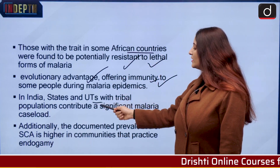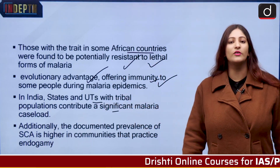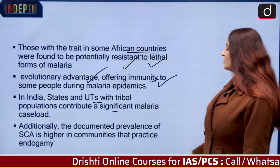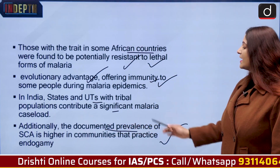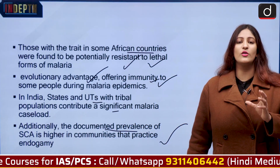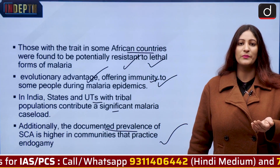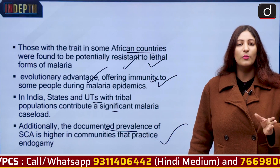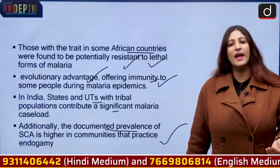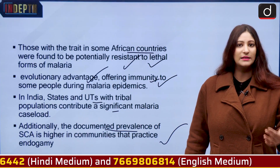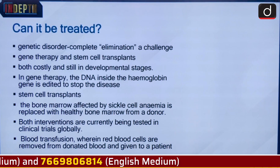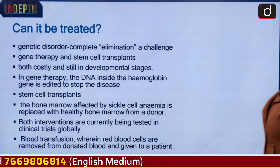In India, states and union territories with tribal populations contribute a significant part of the malaria case load. Additionally, the documented prevalence of sickle cell anemia is higher in communities that practice endogamy, because when both the father and mother are carriers of sickle cell, their progeny will of course have the same condition.